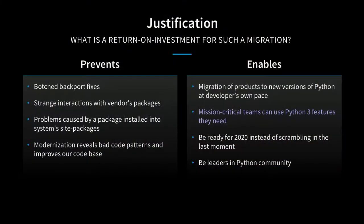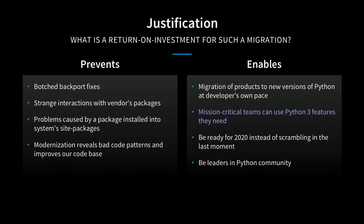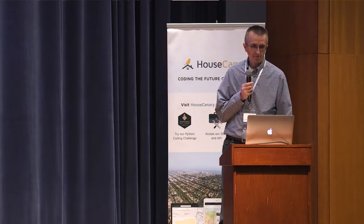If you still need to justify the return on investment to your manager, there are a couple of suggestions. Long-term versions of Linux distributions tend to backport fixes from new Python versions—sometimes binary-incompatible backports happen and you have to rebuild hundreds of things. That's not going to happen anymore. You'll also enable mission-critical teams to use new features and be ready to not scramble again in 2020 when Python 2.7 is shut down.